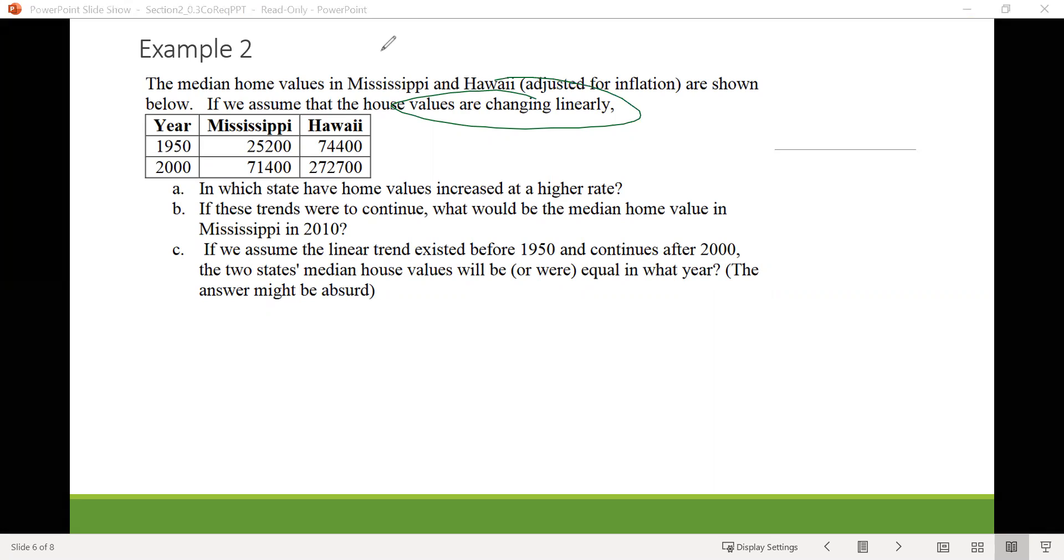We have three things we need to do. So in the first one it says in which state have home values increased at a higher rate. We see that word rate there, and since we're talking about linear functions we know that the rate is connected to a rate of change or a slope. So that means that for each of these we need to figure out the slope or the rate of change and then look at which one has increased faster.